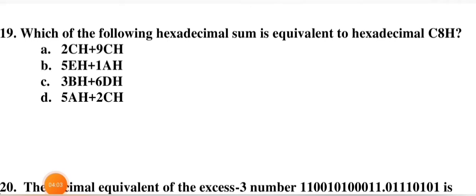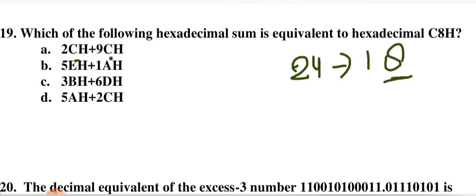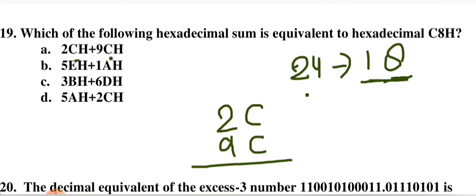Which hexadecimal sum is equivalent to hex C8? Adding each combination: C + C = 24 decimal, which in hex is 18 (write 8, carry 1). Then 9 + 3 + carry 1 = 13 = C in hex. Result is C8. Option A is correct.